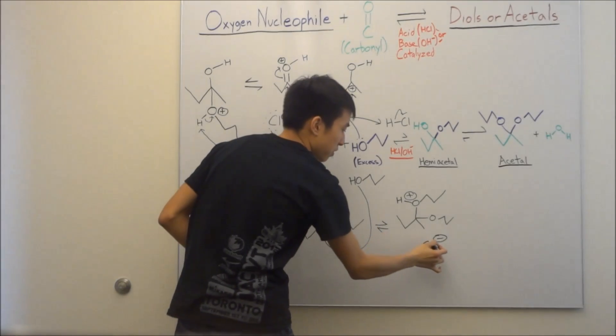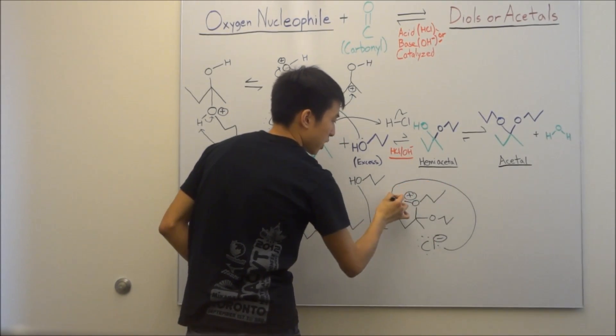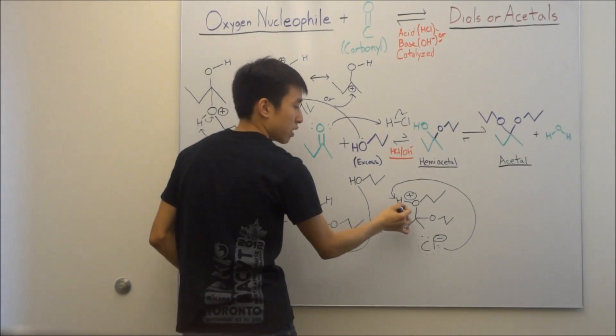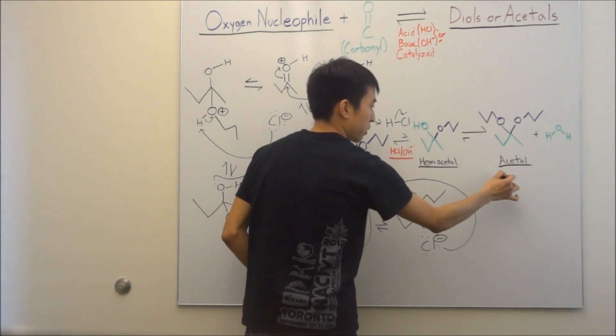And the Cl- can help us out perfectly. Because he has electrons. I can grab the H, resonate the electrons, well not resonate, but give the electrons to the oxygen. And then, here we go.